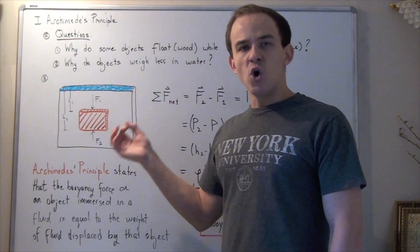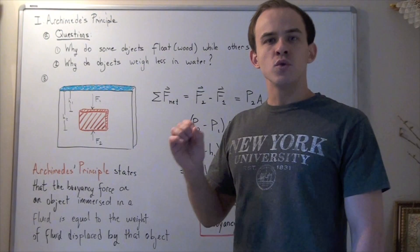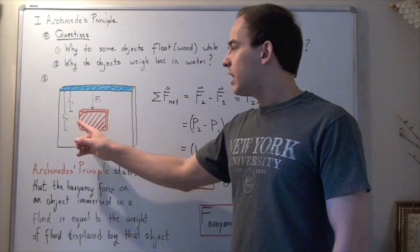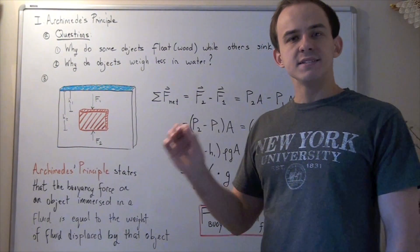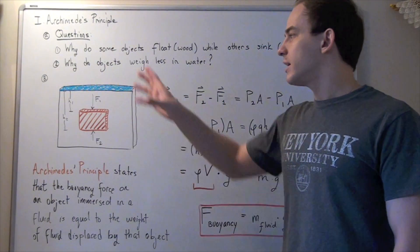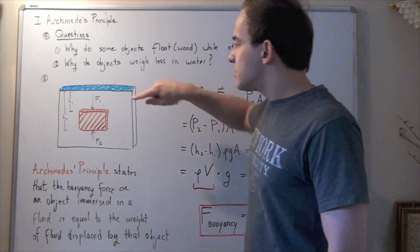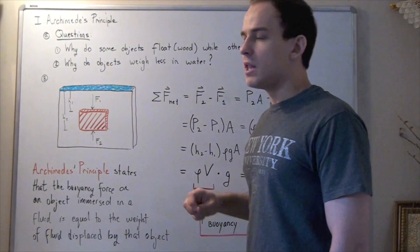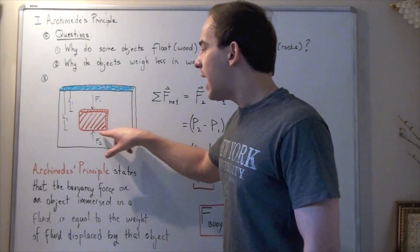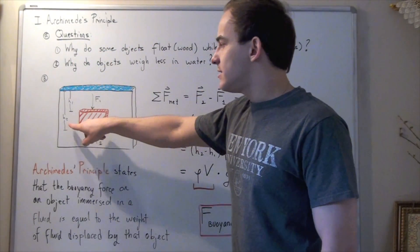Let's suppose we have an open container that's open at the top, and let's suppose we fill this container to the brim with some fluid, let's say water. Now let's say we also take a solid block and place that solid block inside our fluid — we submerge it into our fluid-filled container — in a way such that the distance from the top face of the block to the surface of the water is H1, and the distance from the bottom face of the block to the top of the fluid is H2.